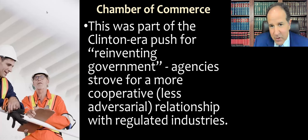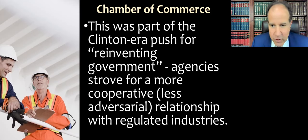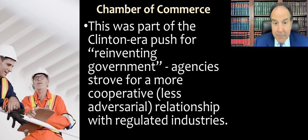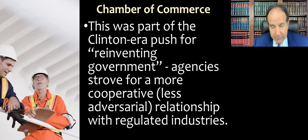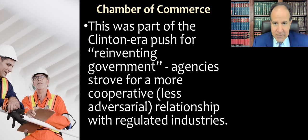The CCP was part of a Clinton-era push across the federal government for something called 'reinventing government.' Agencies were striving for a more cooperative and less adversarial relationship with regulated industries. Instead of just command-and-control regulation, we started to get negotiated rulemaking and programs where agencies would enter into a memorandum of understanding — almost a binding contract — with a particular corporation to do certain things that satisfy the agency's safety goals outside of the enforcement context.